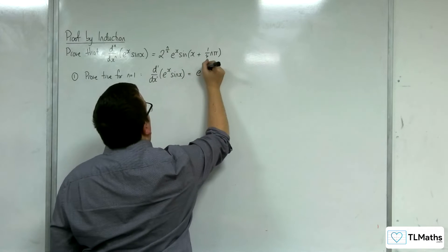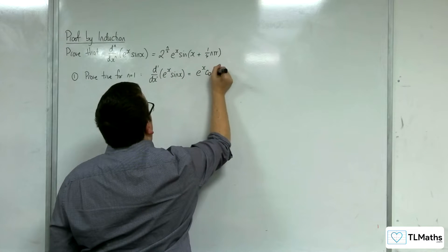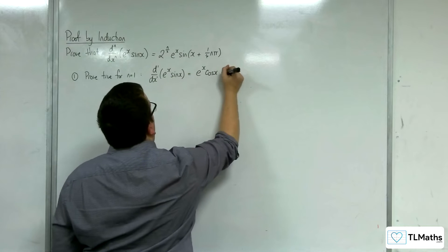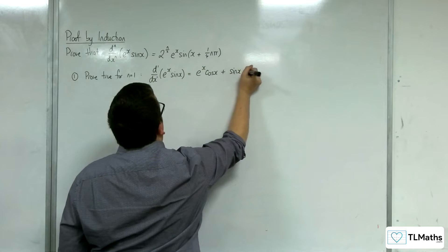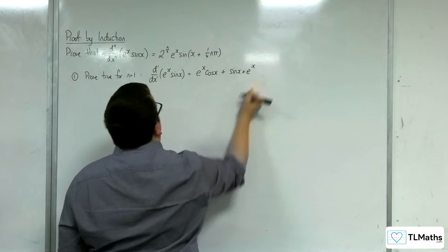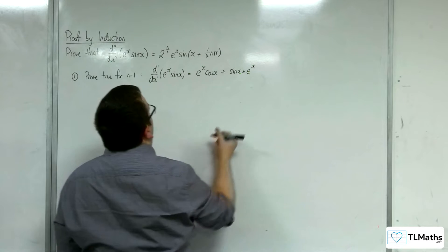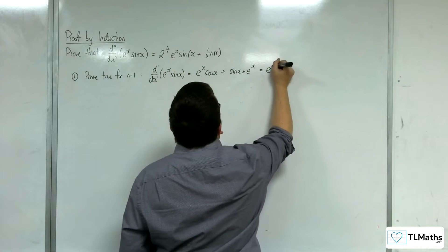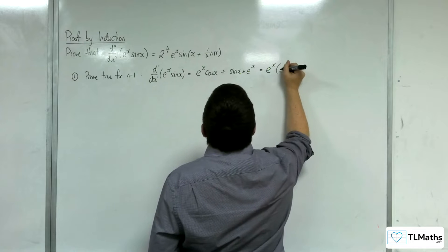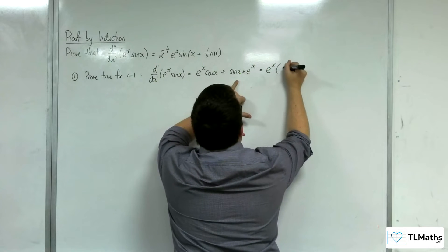So we've got e to the x times the derivative of sine x plus sine x times the derivative of e to the x. So here we've got e to the x times cosine x plus sine x.